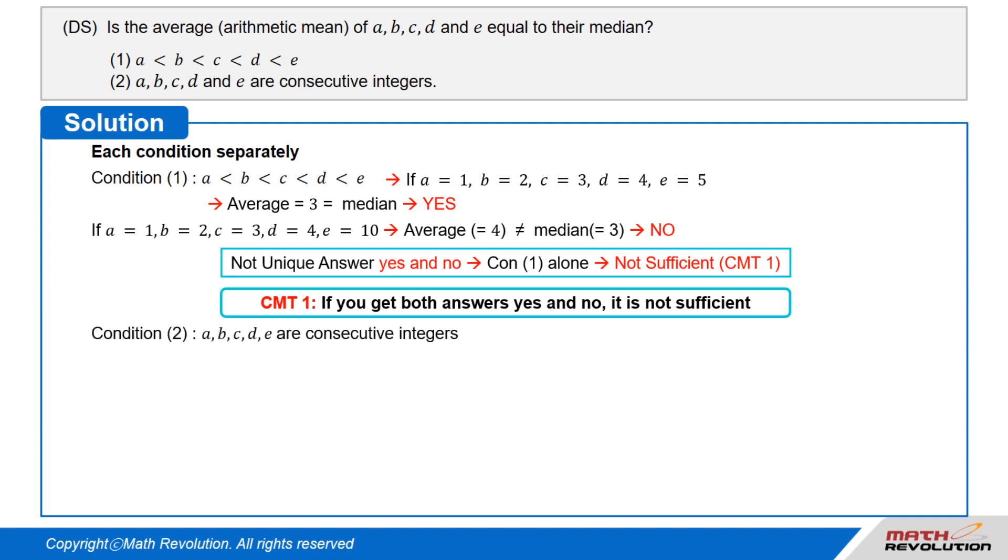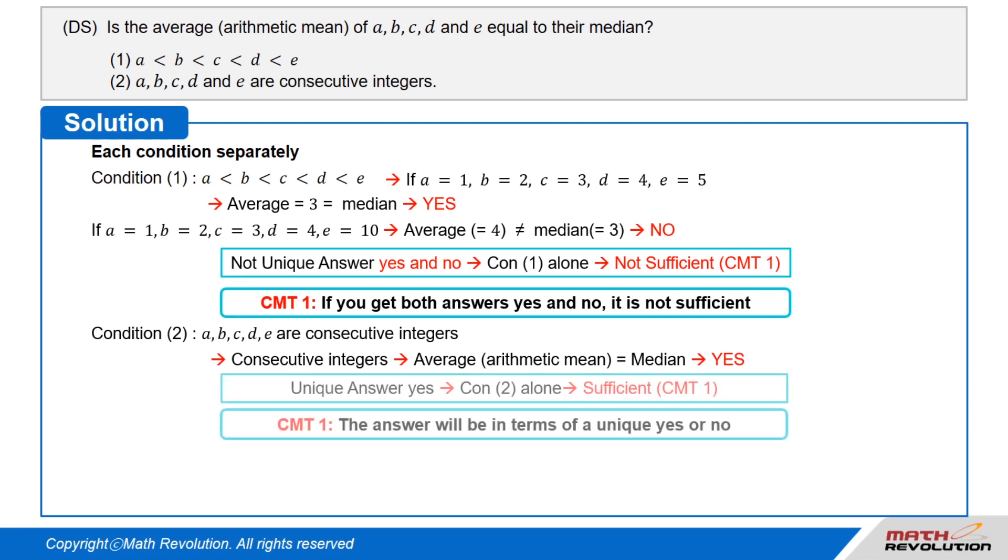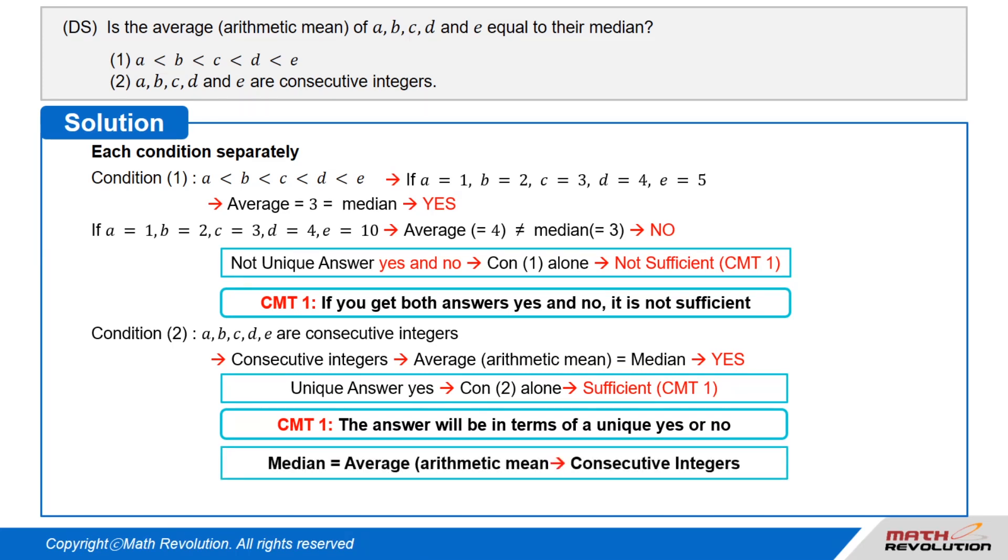Condition 2 tells us that A, B, C, D, and E are consecutive integers. Since consecutive integers have a property that their average or arithmetic mean is equal to the median, we get yes. The answer is unique, yes, so the condition is sufficient according to CMT 1, which means that the answer will be in terms of a unique yes or no. The median equals the average or arithmetic mean for consecutive integers. This often appears on the exam, so remember this. Condition 2 alone is sufficient.